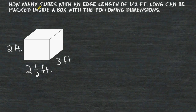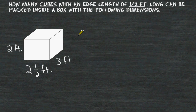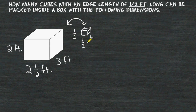In this problem we want to calculate how many cubes with an edge length of half of a foot long can be packed inside a box with the following dimensions. Basically, if we had a cube with an edge length of half of a foot, how many of these small cubes can be packed inside the box that's shown?